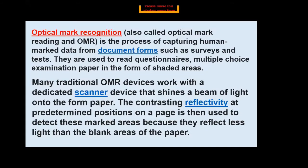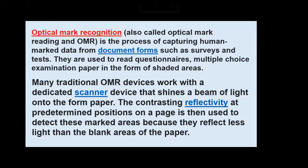OMR readers are used to read questionnaires and multiple choice examination papers with shaded areas. You simply shade the circular area for the option you want to select, then insert the paper into the optical mark recognition scanner. It scans that shaded point and gives you the correct answer — whether it is right or wrong. Traditional OMR devices work with a dedicated scanner that shines a beam of light on the form paper.